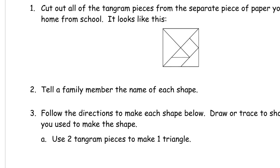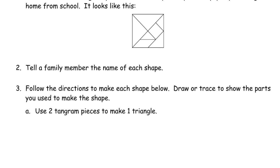Follow the directions to make each shape below. Draw or trace to show the parts you used to make the shape. Use two tangram pieces to make one triangle. I'll give you a hint that it's already set up in the puzzle that way. Once you cut up and take the pieces apart, you may have a hard time trying to figure out how to put them together to make the triangle. But I'll give you a hint first.